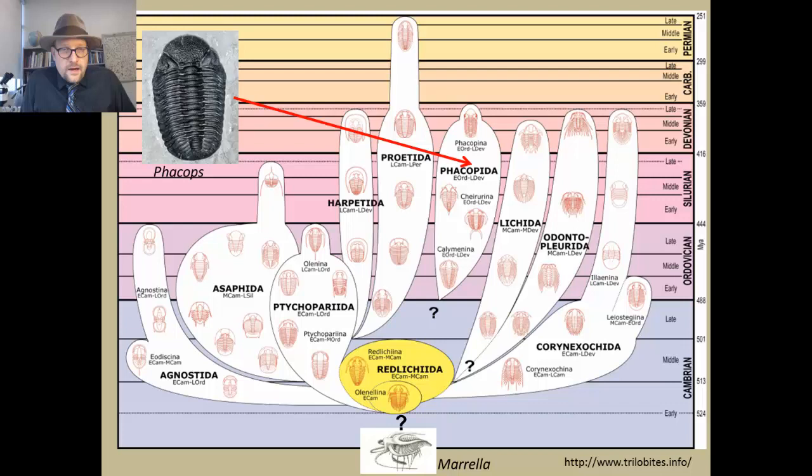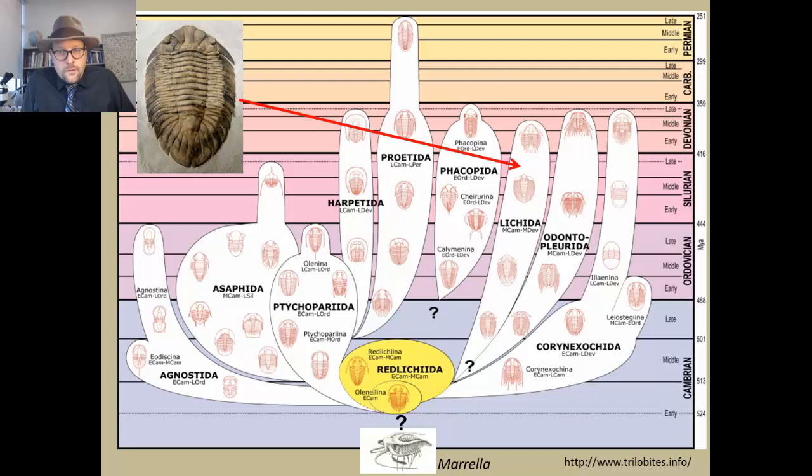Probably the most famous and more common of the trilobites is the Phacopida. These are the ones with very complex eyes. These guys actually get pretty big too. I've seen some large ones in collections, and they're known from the Ordovician to the Devonian.